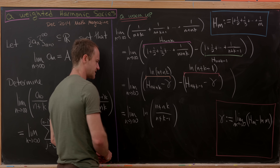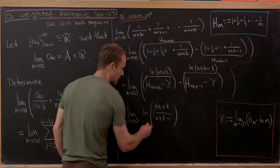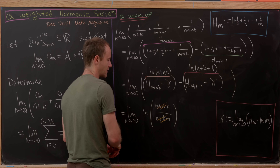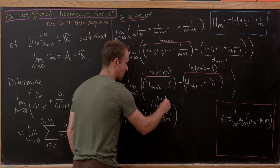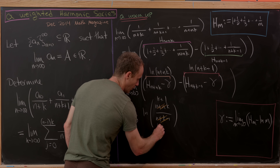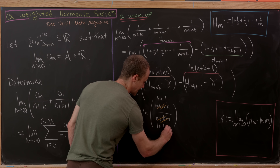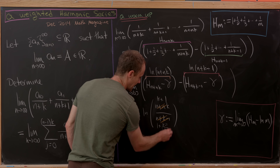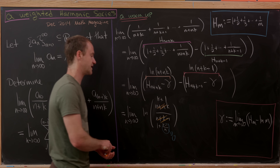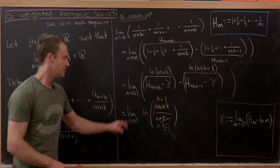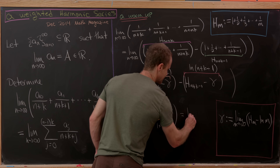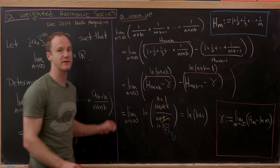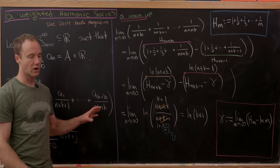Dividing numerator and denominator by n gives (k+1) in the numerator and (1 + (k−1)/n) in the denominator. As n → ∞, the (k−1)/n term goes to 0, so our final limit is simply ln(k+1). That completes the warm-up problem.